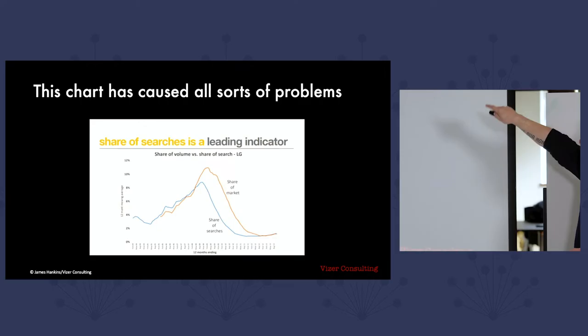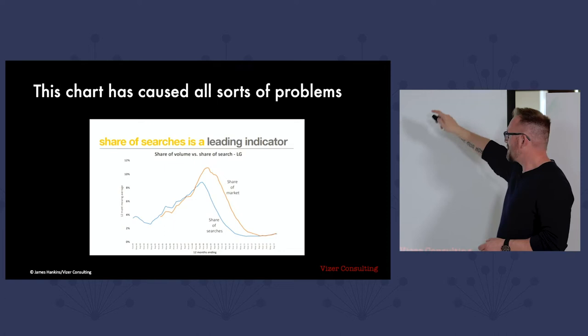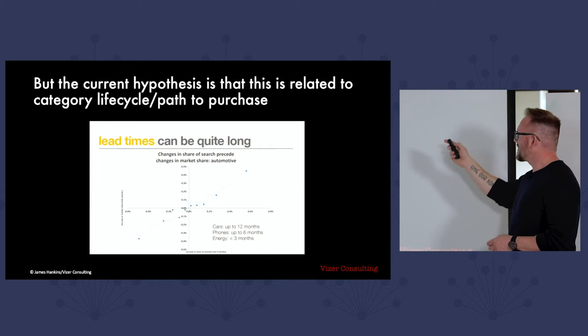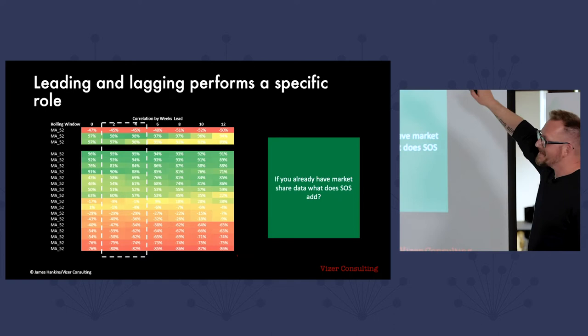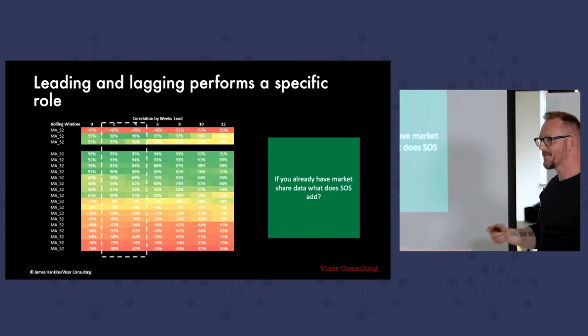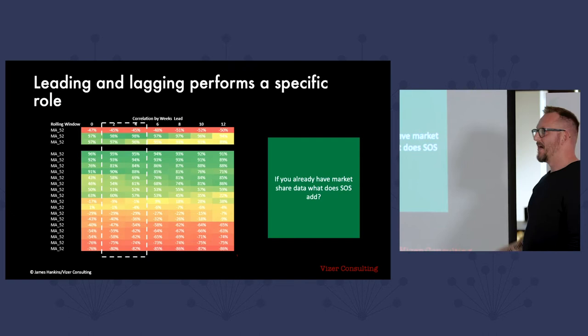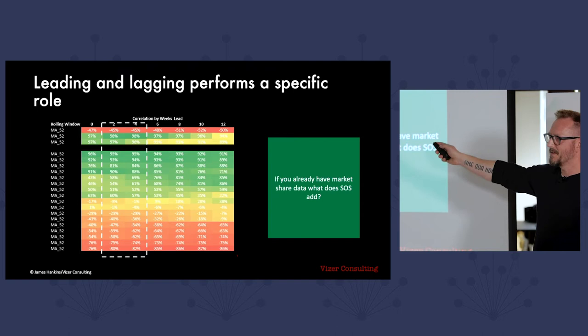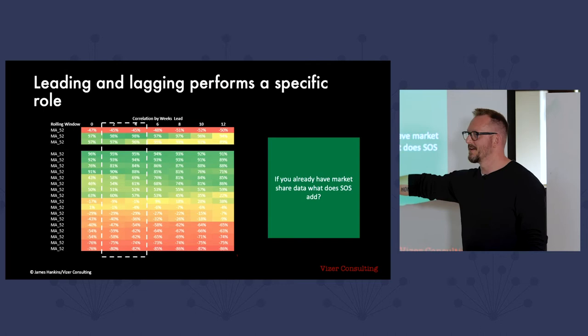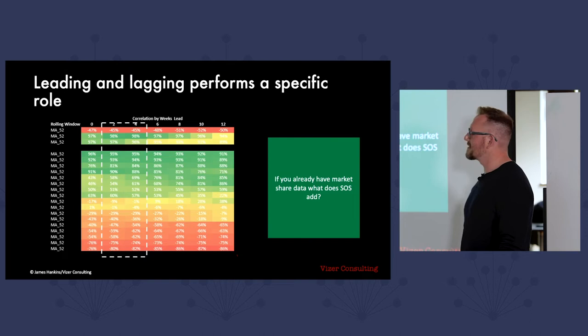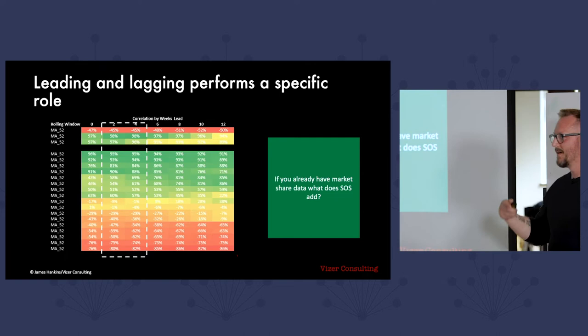Leading and lagging — this caused me loads and loads of problems. Les says Share of Search is a leading indicator. It performs a specific role: the only way you can find out if you've got leading or lagging is if you've got granular market share data anyway. If that data comes from Nielsen, there's a seven week lag, and you can get market share data seven weeks earlier than Nielsen. Can you make enough shifts in those seven weeks — can you see what's happening in market share terms quicker than your competitors and then get something out in market within seven weeks? It's an operational challenge rather than a strategic challenge. That's what leading and lagging tells us.